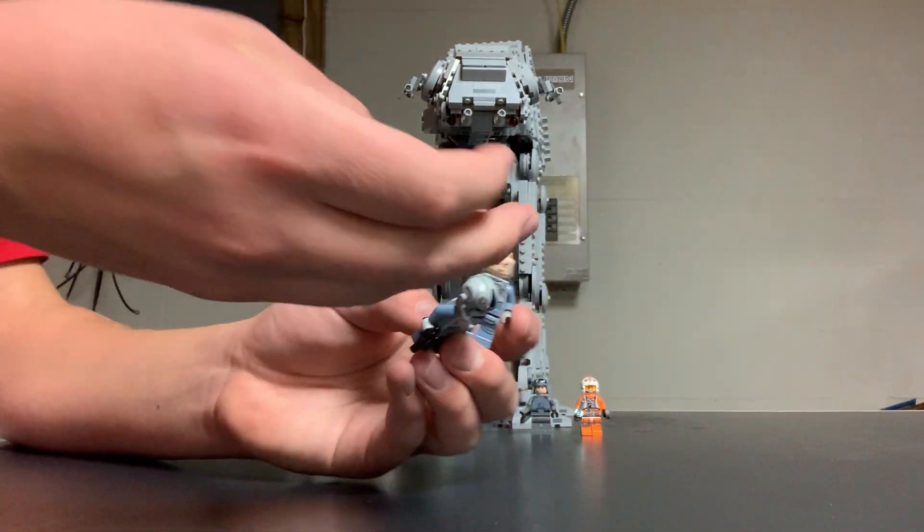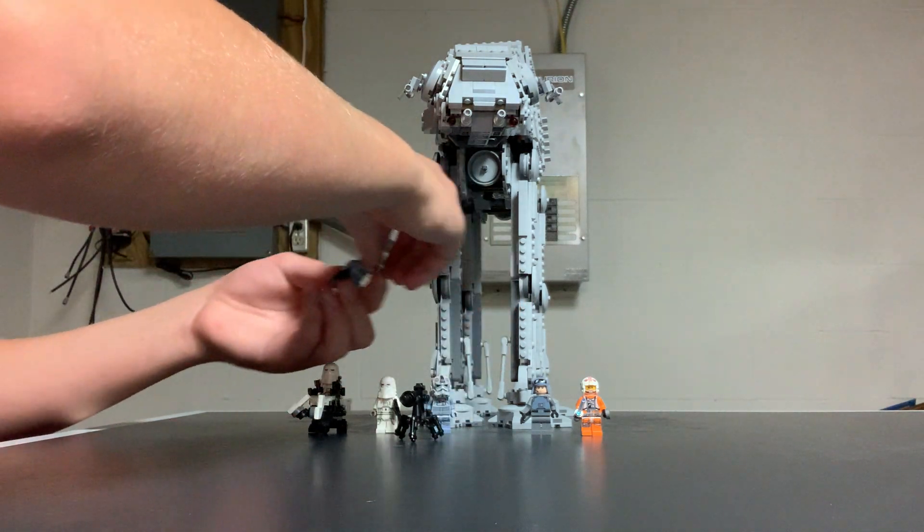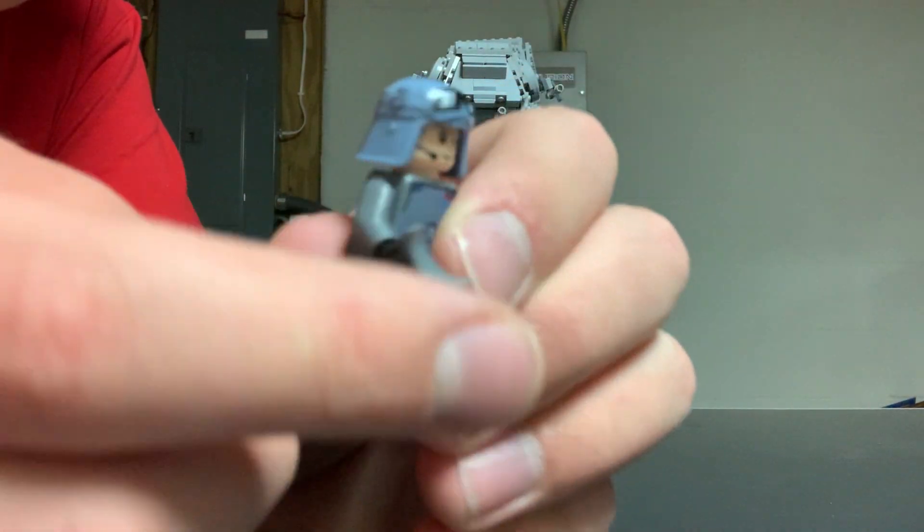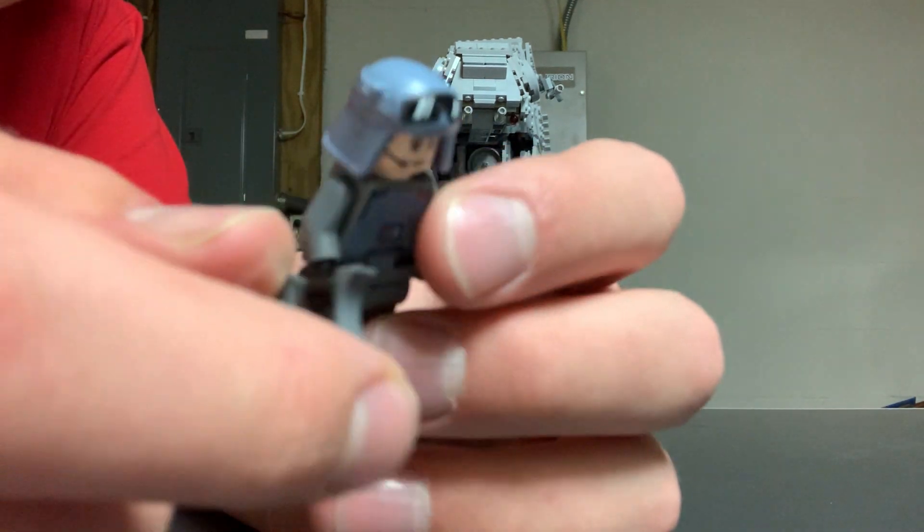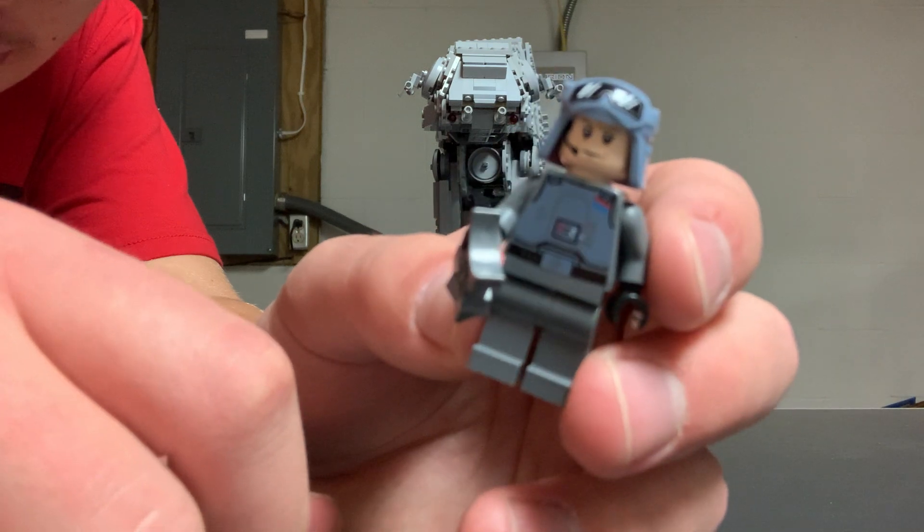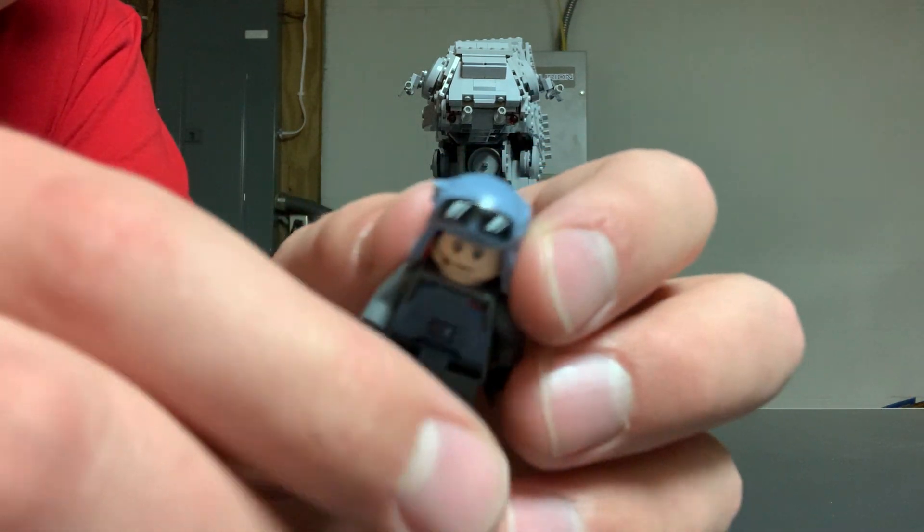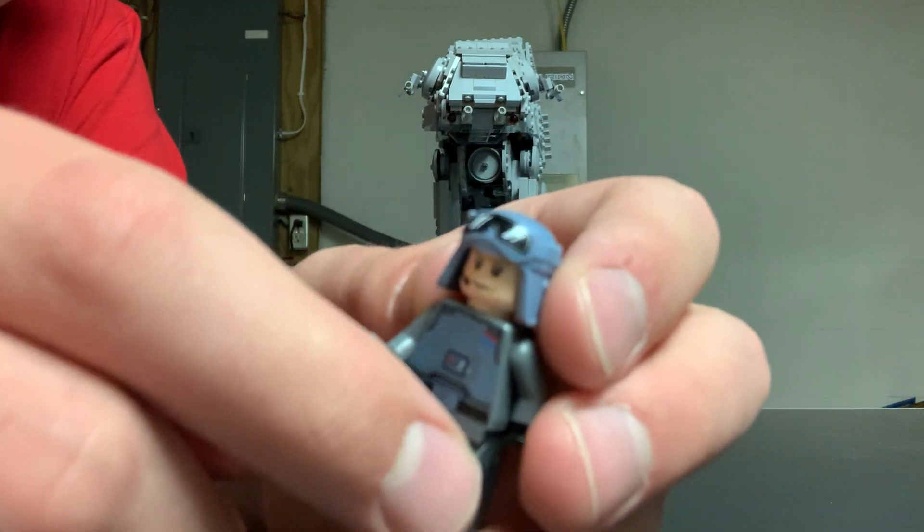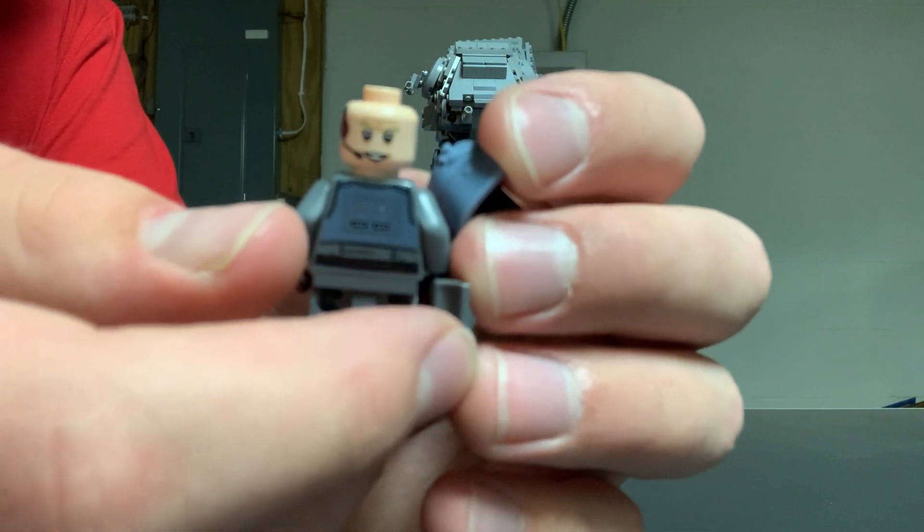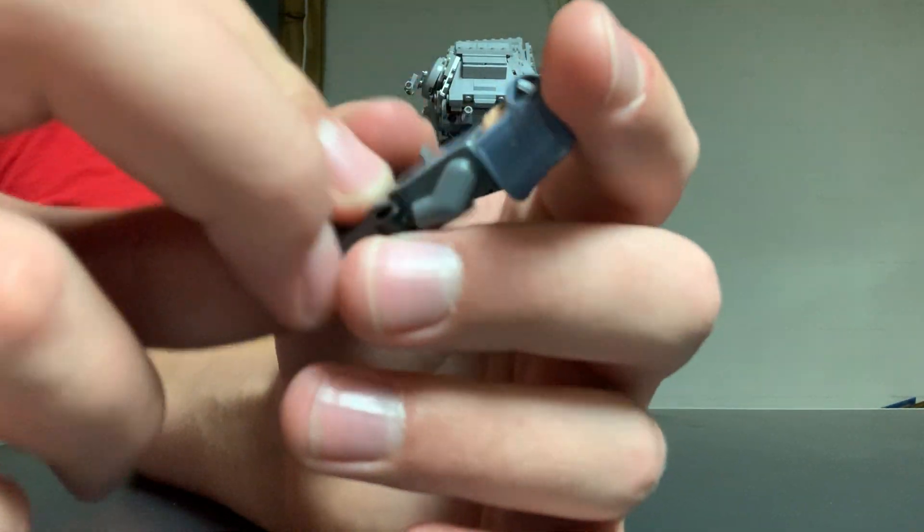And then, of course, we've got the one and only General Veers. This guy has binoculars so he can look far distances away. Nice back printing, torso printing. That's a nice newer helmet mold they've started to use with goggles printed on the top there. Nice face printing with that comm link to communicate with other people piloting other AT-ATs during the Assault on Hoth, which is what the set is based off of.